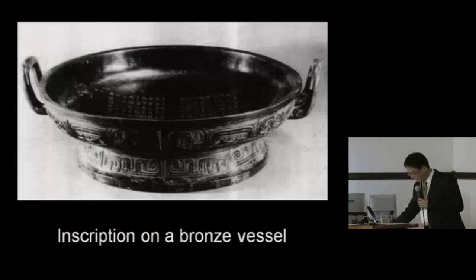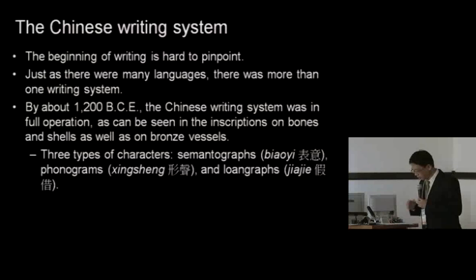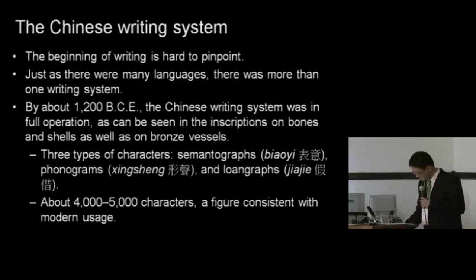In both of these cases, the evidence points to a writing system in full operation, with the three basic types of characters already present: semantographs, or biaoyi characters; phonograms, or xingsheng; and finally, loan graphs, or jiajie. In general, scholars estimate that around 4,000 to 5,000 characters were in use during this time, and this is a figure consistent with modern usage.